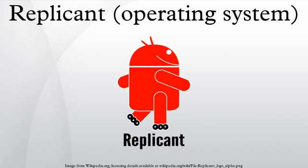Replicant is a free and open source operating system based on the Android mobile platform, which aims to replace all proprietary Android components with their free software counterparts. This also makes it a security-focused operating system as it closes discovered Android backdoors. It is available for several smartphones and tablet computers. The name Replicant is drawn from the fictional Replicant Androids in the Blade Runner movie. Replicant is sponsored and supported by the Free Software Foundation.